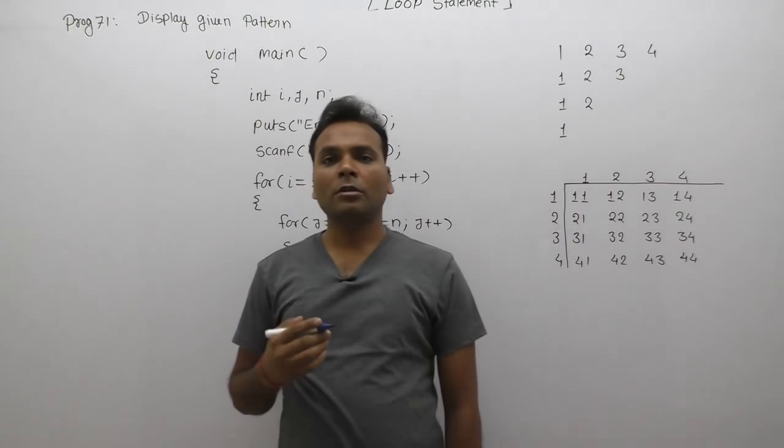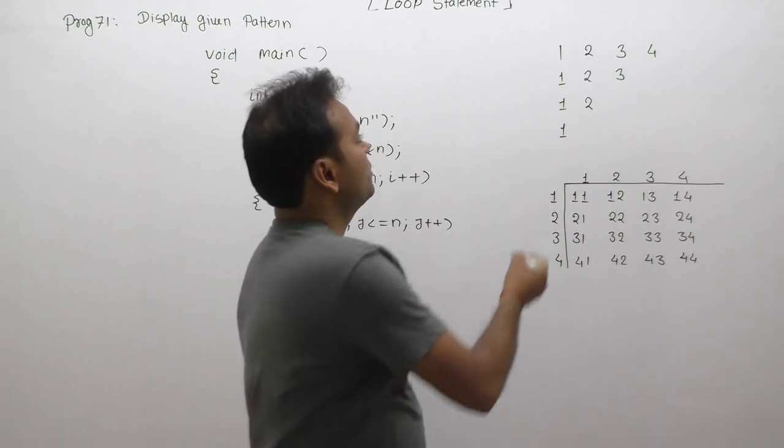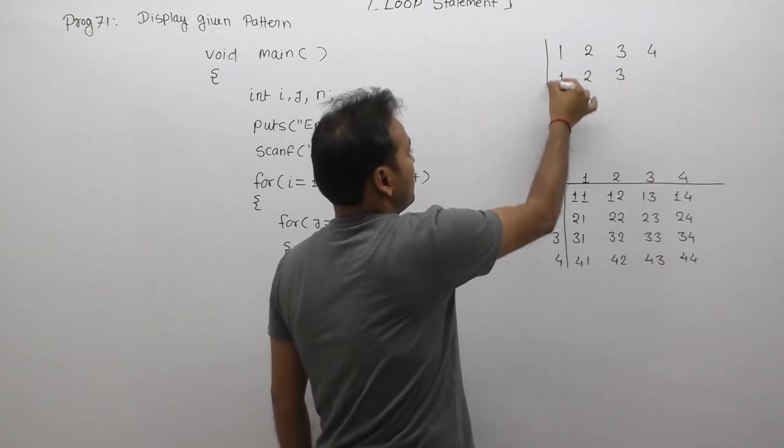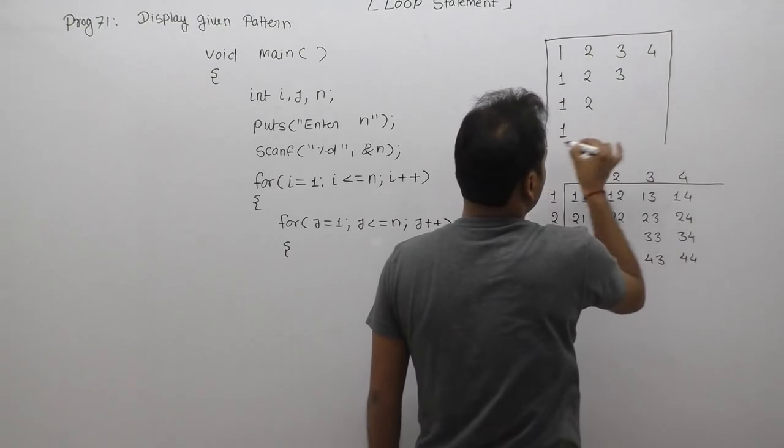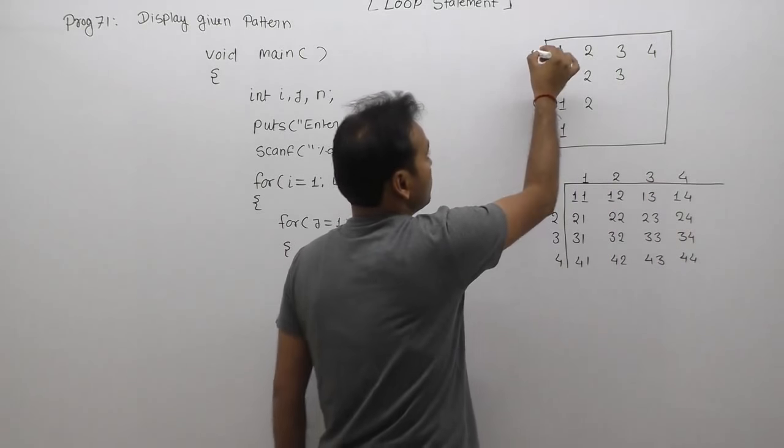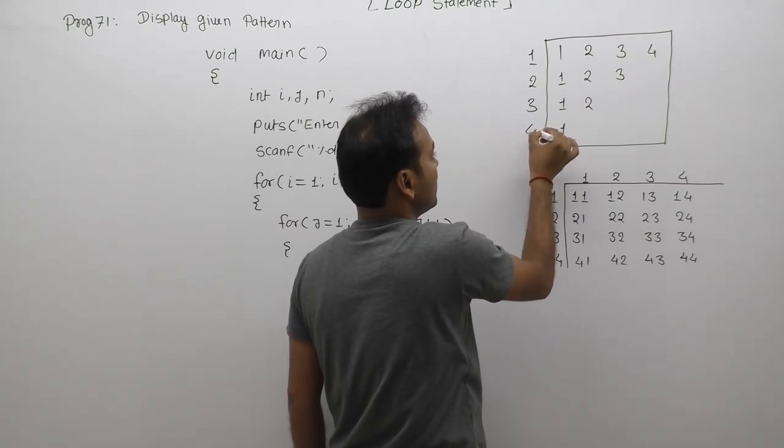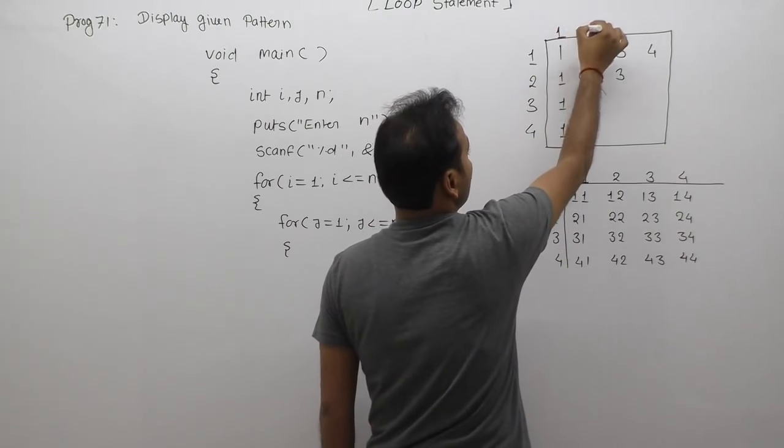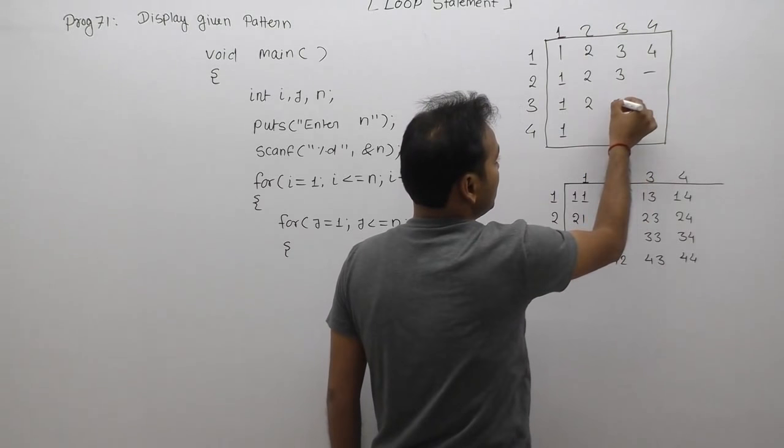The next program is about number patterns. In this case, we want to display a given pattern. We are providing a total number of four rows and four columns. The pattern can define four rows and four columns, almost the same as the previous example.